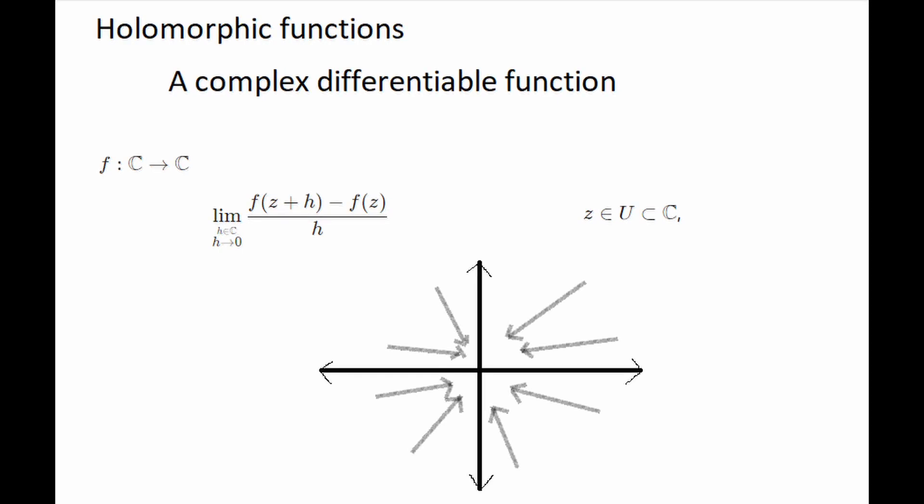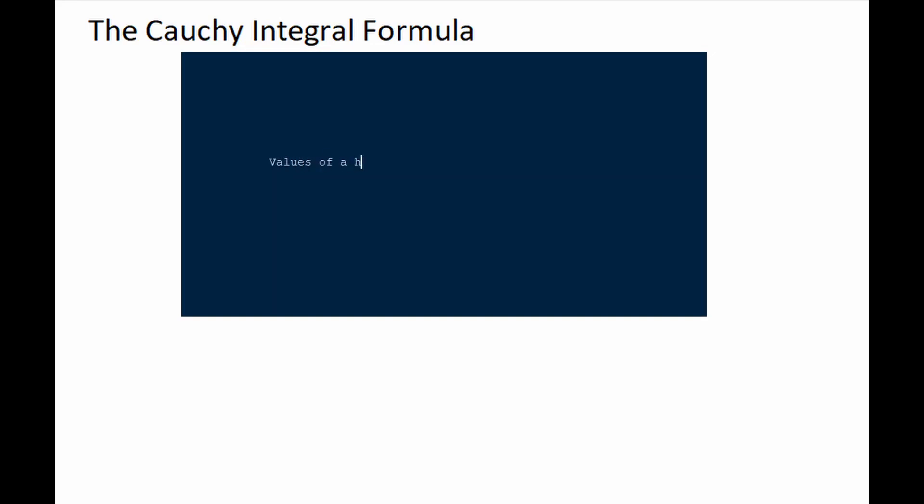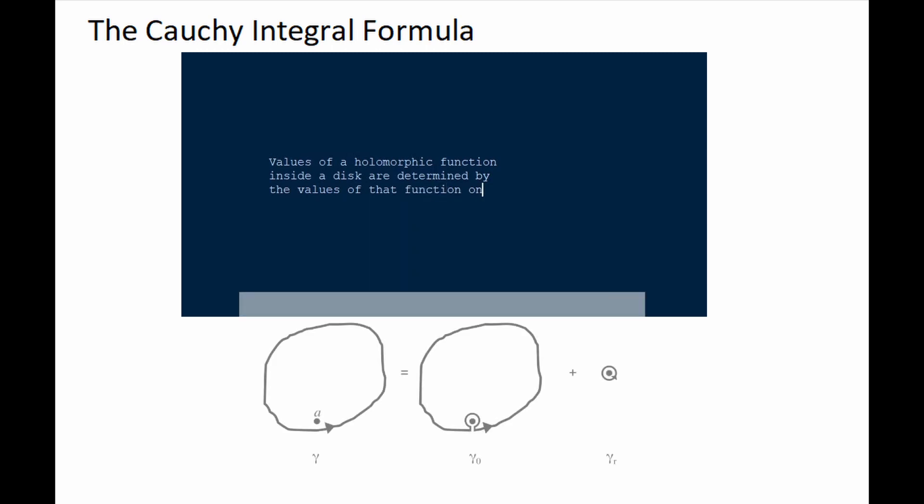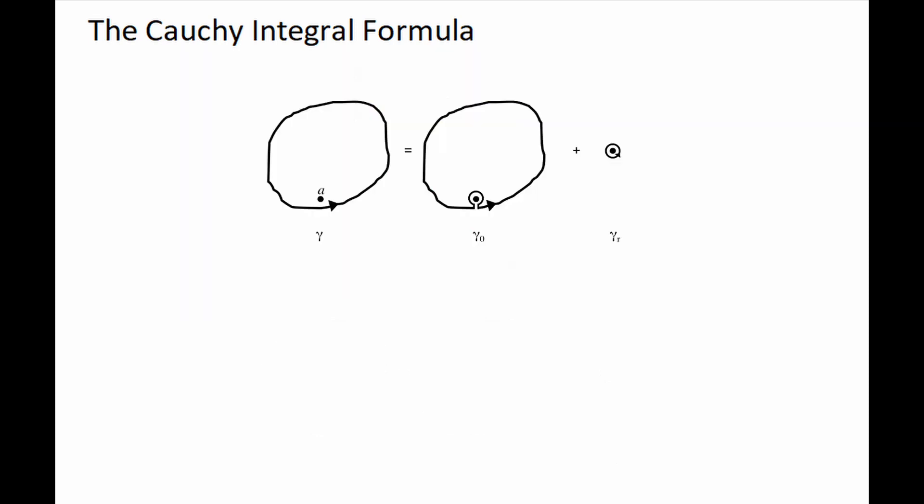The Cauchy integral formula says that the values of a holomorphic function inside a disk are determined by the values of that function on the boundary of that disk. As we can see in the figure, gamma is the boundary of any region whose interior contains a. For a holomorphic function from u to C and gamma being a circle contained in u, then for any a in the disk bound by gamma is given as follows.